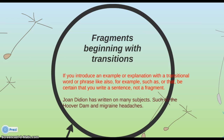Sometimes we also have fragments that begin with transitions — words like 'for example,' 'also,' 'such as,' and 'that,' which let you move between sentences and paragraphs smoothly. It's very important that when you use one of these words, you're writing a sentence and not a fragment. Look at the example: 'Joan Didion has written on many subjects. Such as the Hoover Dam and migraine headaches.' Change the period after 'subjects' to a comma, and now you have a complete sentence.